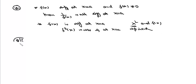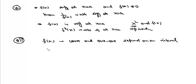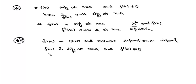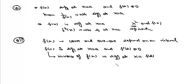The seventh result: if f(x) is a continuous, one-one function defined on an interval, and f(x) is differentiable at x = a with f'(a) ≠ 0, then the inverse function f⁻¹ is differentiable at x = f(a), and its derivative at x = f(a) is equal to 1/f'(a).